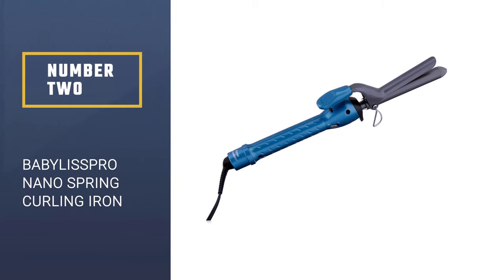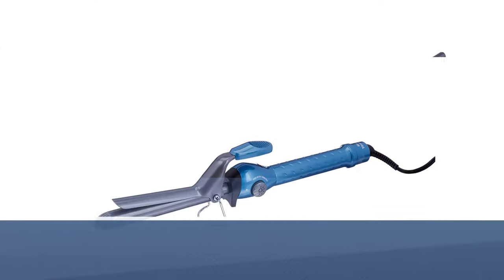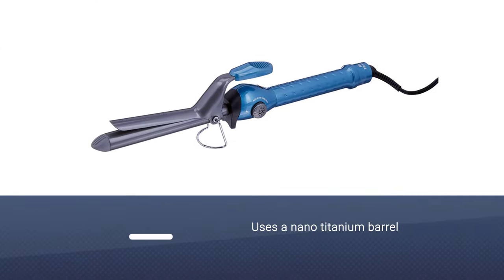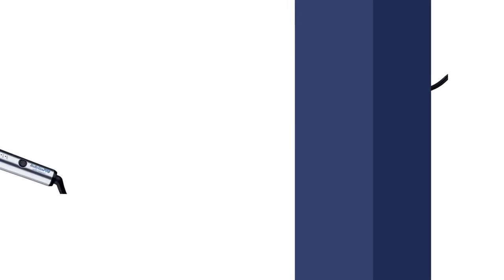Number 2. Babyliss Pro Nano Titanium Spring Curling Iron. It uses a nano titanium barrel to produce frizz-free curls on all hair types and lengths.